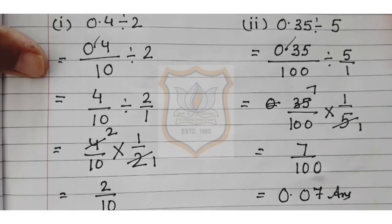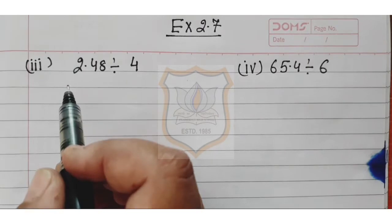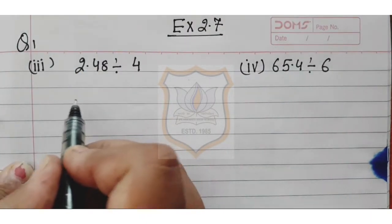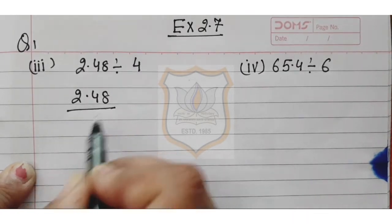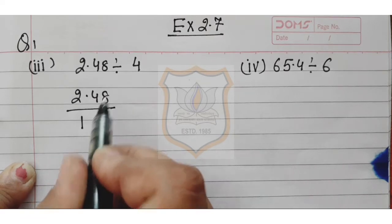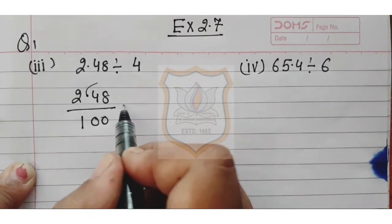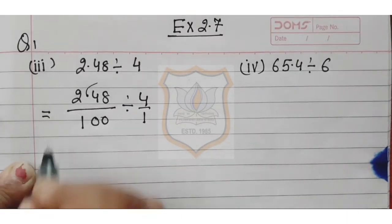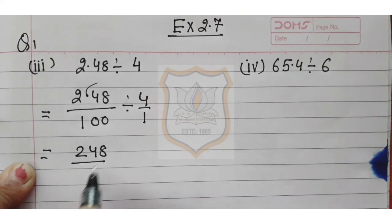Now let's solve exercise 2.7, question number 1, part 3. The problem is 2.48 divided by 4. We remove the decimal — there are 2 decimal digits, so we write it as 248 upon 100, divided by 4 upon 1.